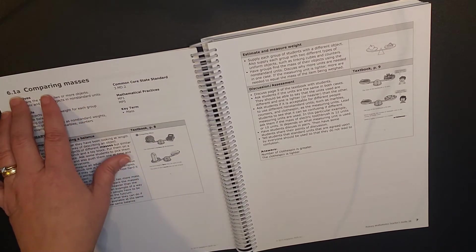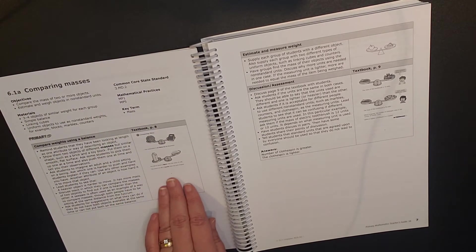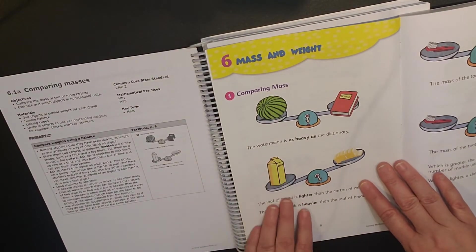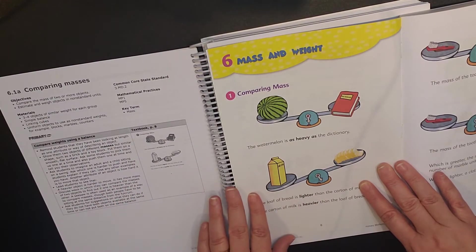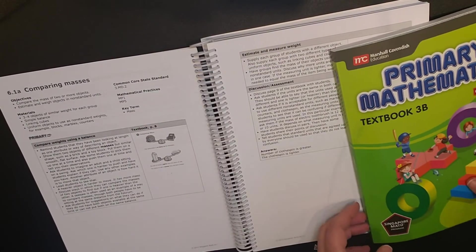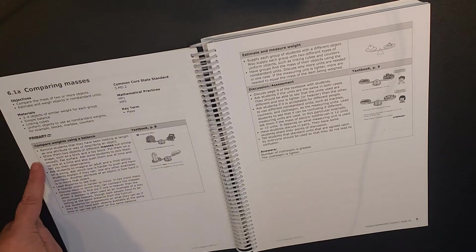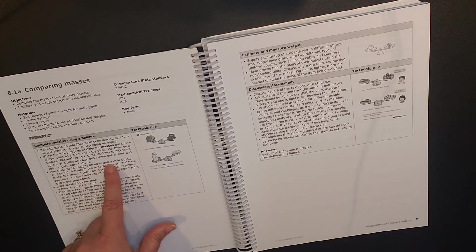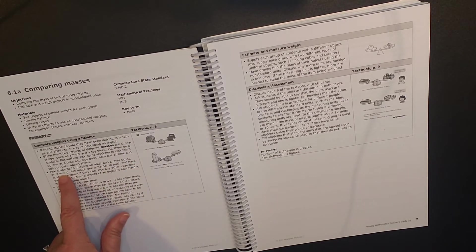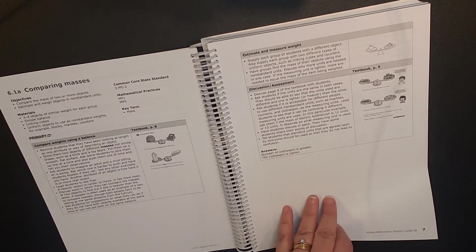And now that is for the whole unit. When we go to lesson 6.1, here's your objectives. And they have some notes for the individual. So this right here is what I consider the meat of the teacher's manual. For the 6.1a, you have objectives, the materials that you'll need. Then they show you the picture within the textbook.